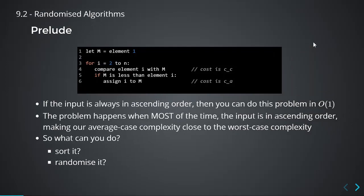And even if that is the case, that actually makes the problem very easy — if you're looking for the largest element, just get the last one. So the problem is: what happens when the input is not always in ascending order, but most of the time it is in ascending order? What can you do?